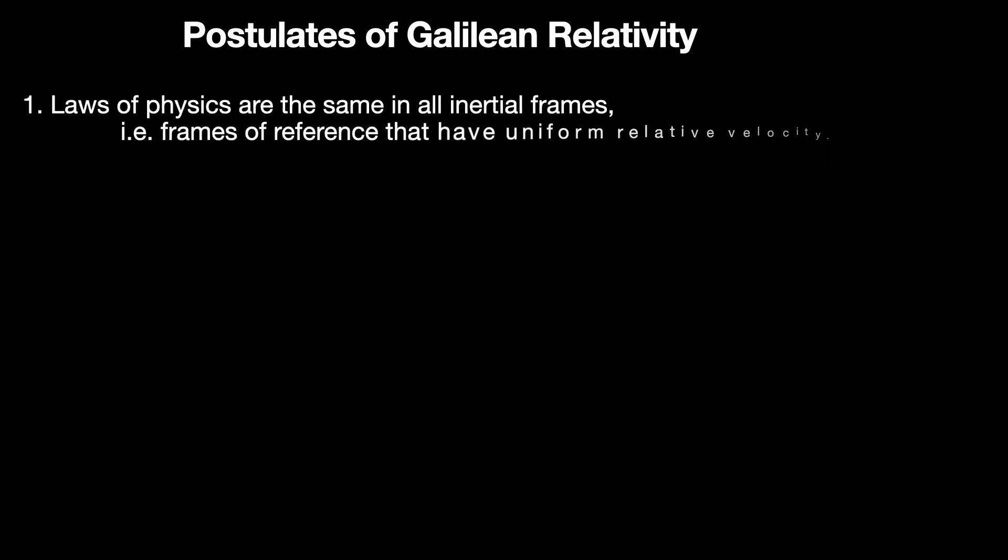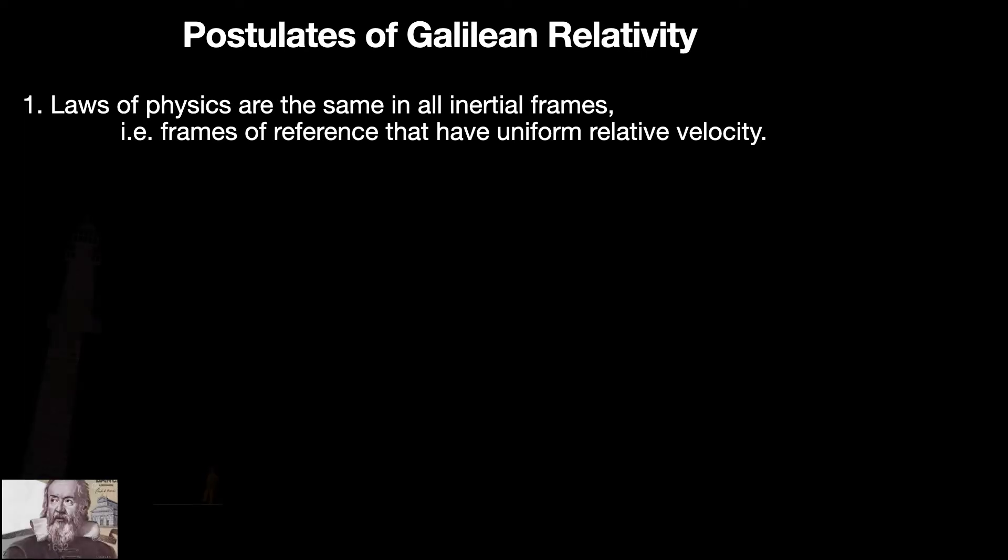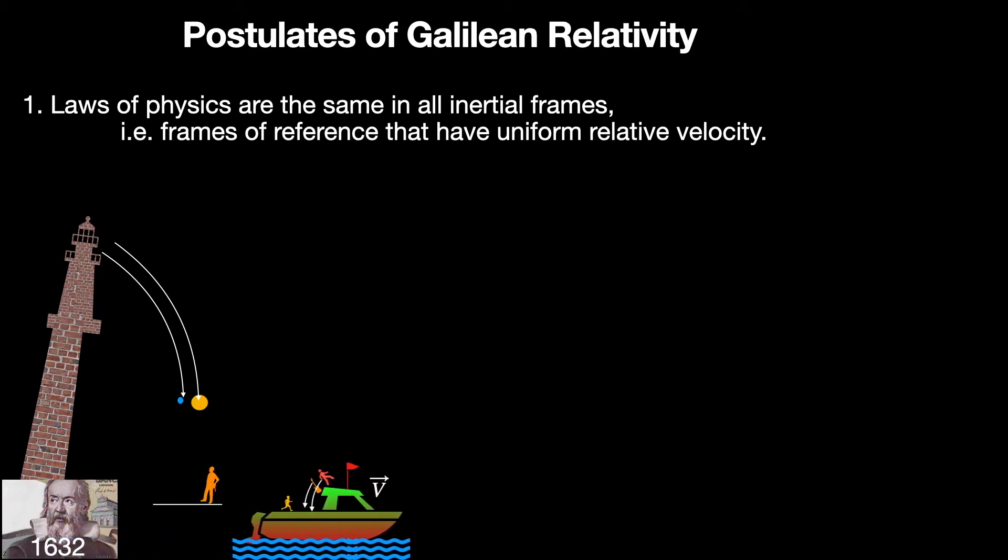Let us start by reminding ourselves what the postulates of Galilean relativity are. It says that the laws of physics are the same in all reference frames moving with uniform velocity with respect to one another, that is all inertial frames. Now to be honest, Galileo was mainly studying inertia, motion of falling bodies or objects sliding on an inclined plane experimentally, and thus he actually meant laws of motion, not laws of all physics.